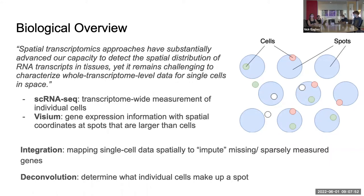To start with an overview: we have two different assays — single cell RNA-seq, where you get transcriptome-wide measurement of individual cells, and spatial transcriptomic approaches like Visium, which give you gene expression with spatial coordinates. One limitation is that the spots are actually larger than cells, so naturally we want to count individual cells within spots and determine their cell types.